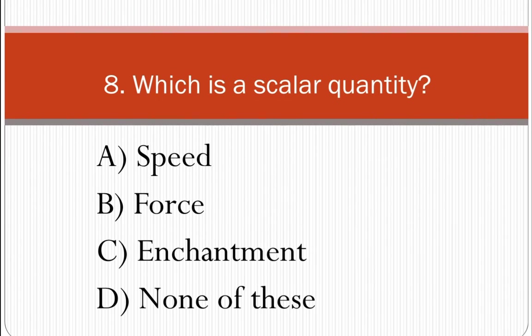Eighth question: Which is a scalar quantity? Options are Speed, Force, or Displacement. A scalar quantity has only magnitude, while a vector quantity has both magnitude and direction.